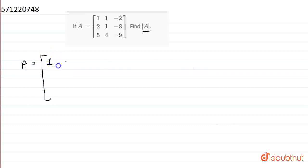So, you have 1, 1, minus 2, the second is 2, 1, minus 3, and the third row is 5, 4, minus 9.